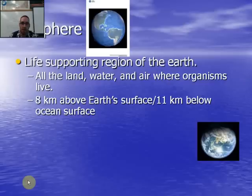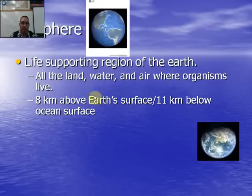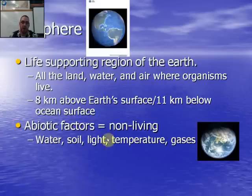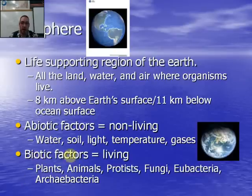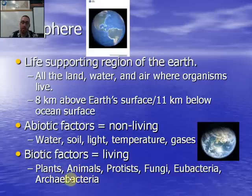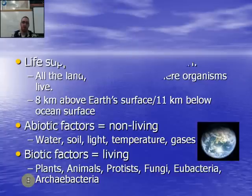The biosphere is the largest level — the life-supporting region of Earth. It extends about 8 kilometers into the atmosphere and 11 kilometers below the ocean surface. Two important categories here: abiotic factors are the non-living components — amount of water, type of soil, sunlight, temperature, and gases like CO2 and oxygen. Biotic factors are all the living things: plants, animals, fungi, protists, eubacteria, and archaea. Ecology examines how biotic factors interact with each other and with those abiotic factors.